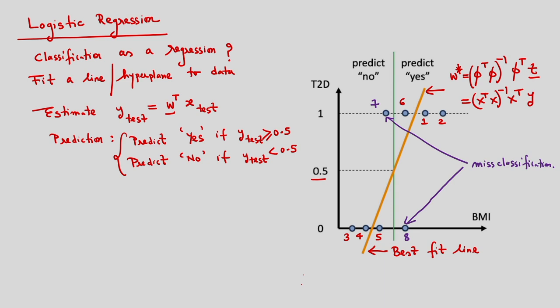Corresponding to point 1, the prediction is yes; point 2, yes; point 3, no; point 4, no. But corresponding to point 7, it should actually be yes, but it is predicted as no. Similarly for sample point 8, there is also misclassification. So for these two sample points 7 and 8, we have misclassifications, meaning linear regression cannot solve this problem.